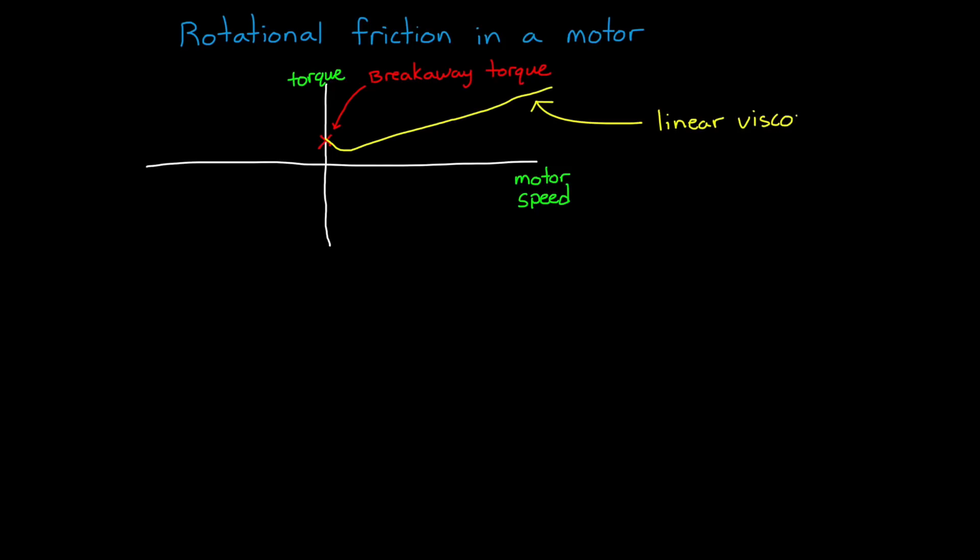and then as the motor speeds up, the linear nature of viscous friction becomes dominant. And since friction opposes motion, it's the exact opposite in the negative direction.